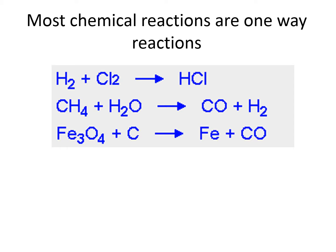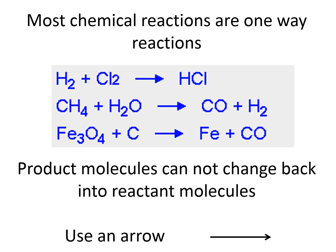Most chemical reactions are one way reactions and they're denoted by this single arrow. Product molecules cannot change back into reactant molecules in these examples.